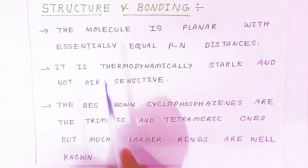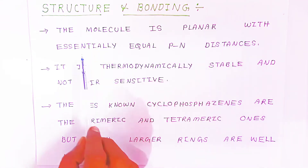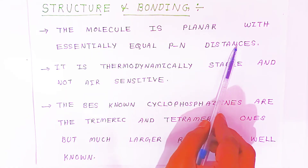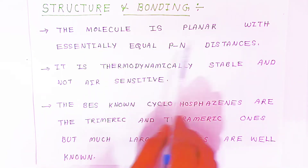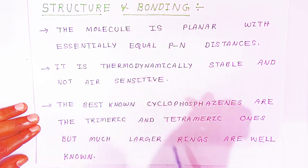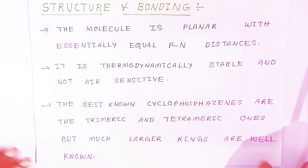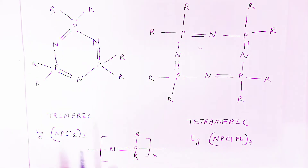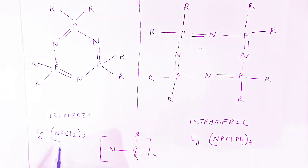Now we are going to see the structures and bonding. The molecule is planar with essentially equal phosphorus-nitrogen bond distances. It is thermodynamically stable and not air sensitive. The best known cyclophosphazenes are the trimeric and tetrameric ones, but much larger rings are well known. This is the structure of trimeric hexachlorophosphazene.